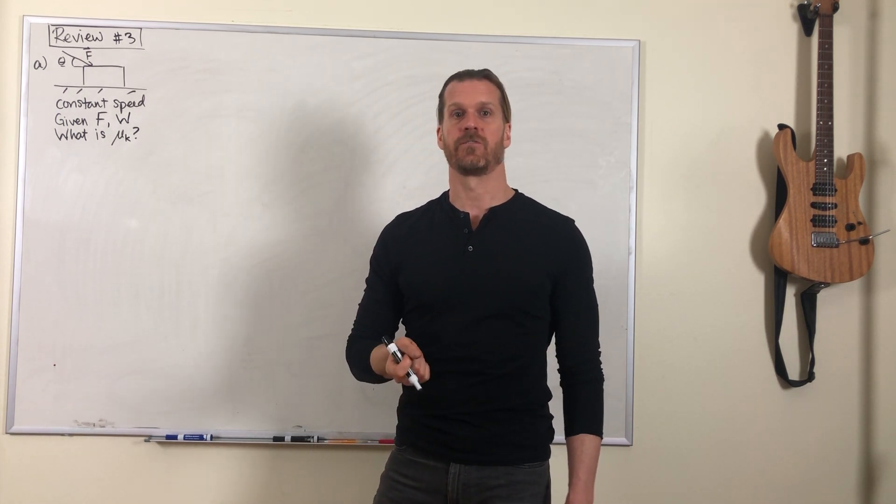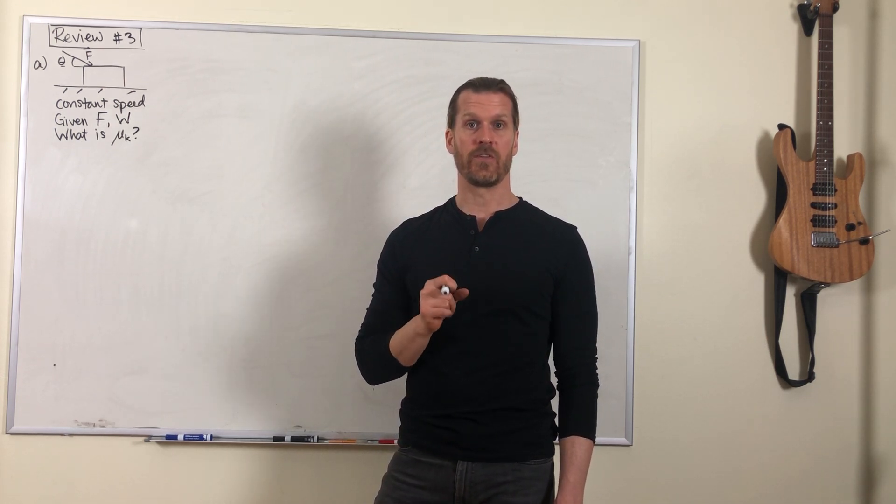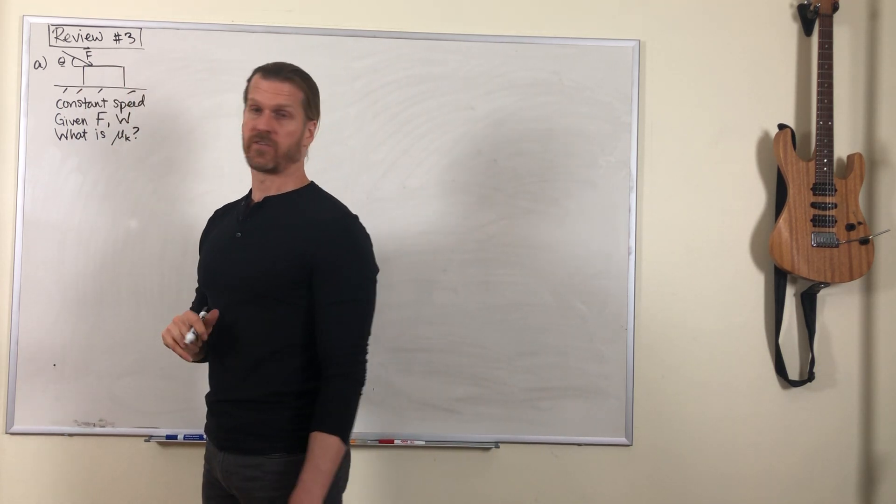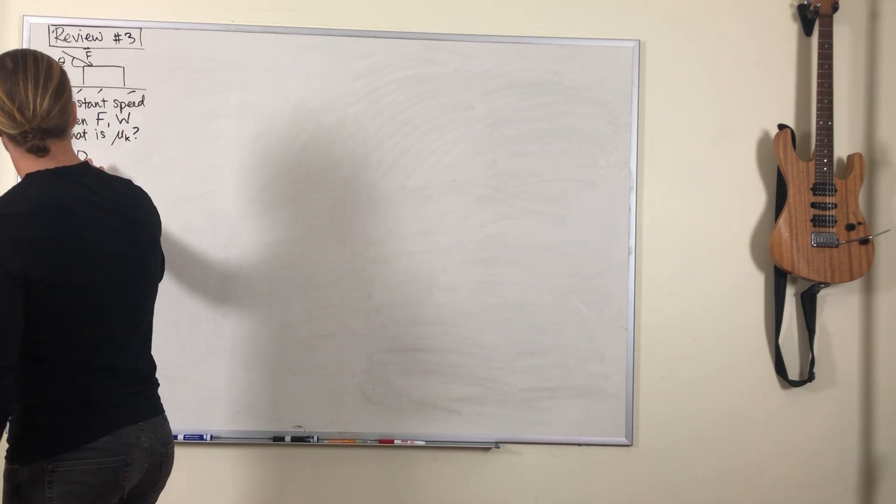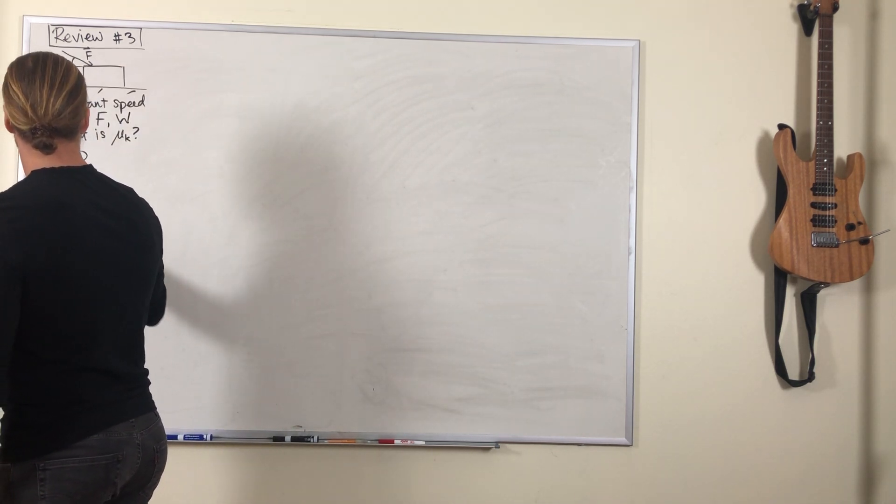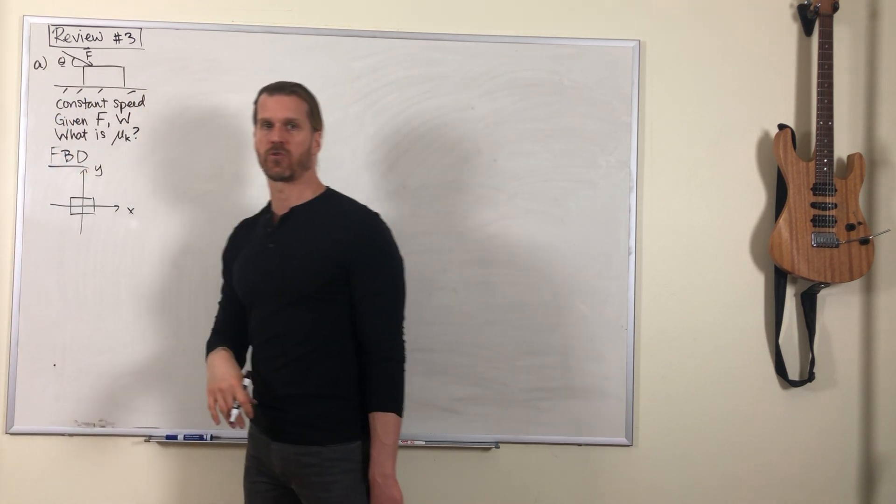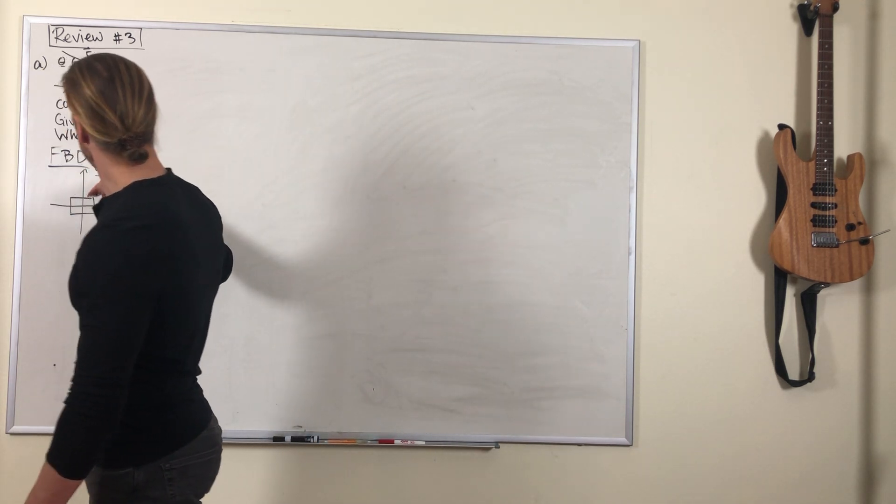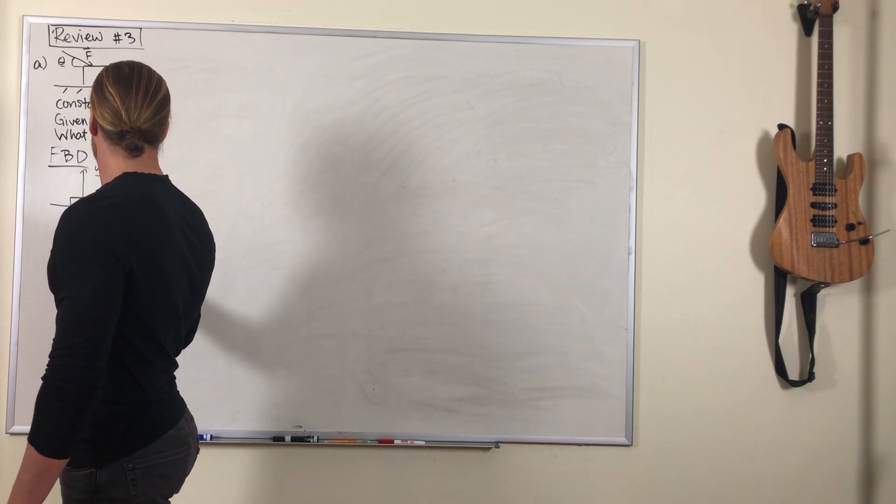And from that information, we're going to figure out what the coefficient of kinetic friction is. So let's do our Newton's second law problem-solving process. We started out with a sketch, now we'll draw a free body diagram. We'll place that box in the center of the free body diagram, draw the coordinate system. Now we'll draw all the forces acting on it. We've got this push and it is at an angle.